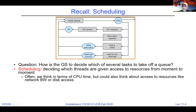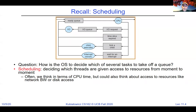Last time we talked about classic scheduling algorithms — deciding which threads are given access to resources from moment to moment. We're really talking about CPU resources, though scheduling can be applied to disk drives as well — who gets the most bandwidth. When we start talking about scheduling disks, we'll move into IO. But for now, we're talking about CPU.